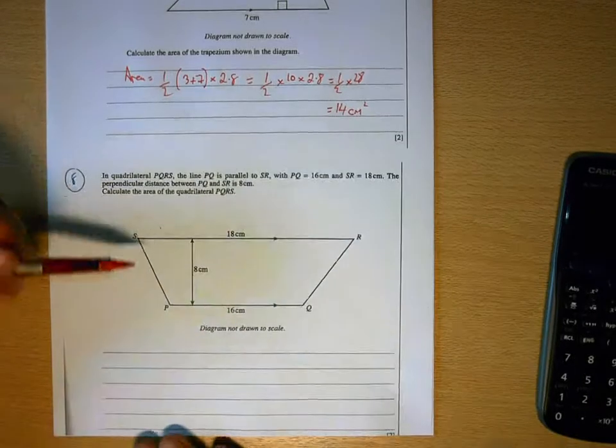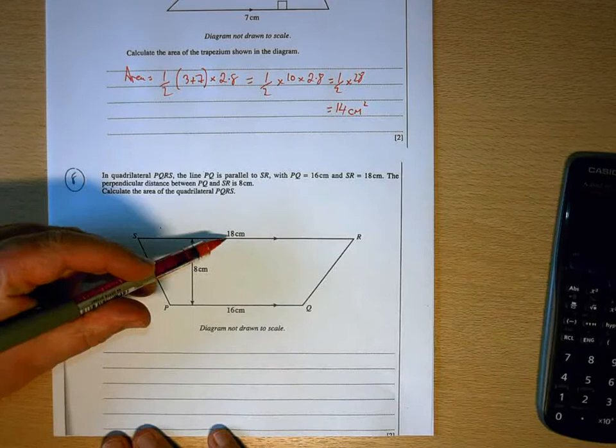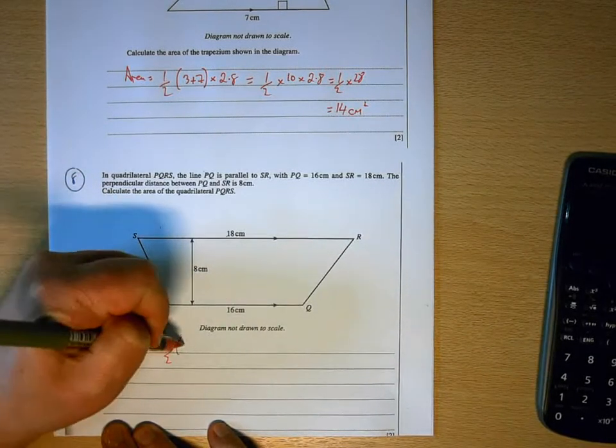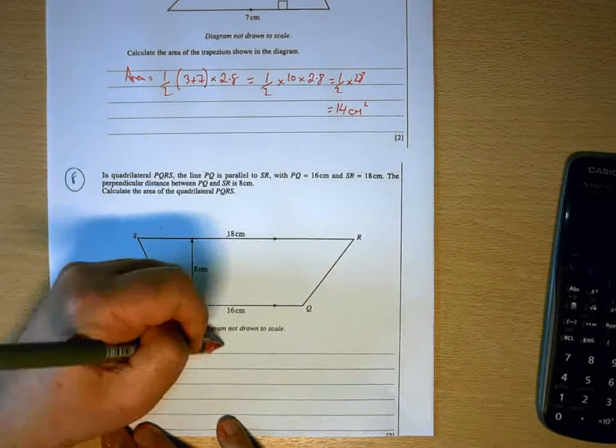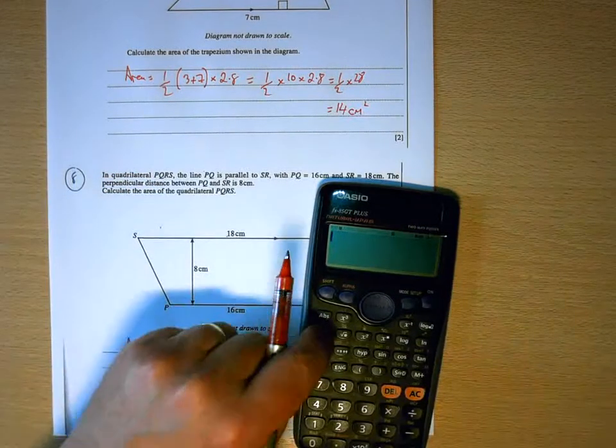Question 8. Same again. It's a trapezium. This time the parallel sides are 18 and 16. So we've got a half, 18, add 16, times the distance between them, which is 8. We'll go back to using a calculator for this one.